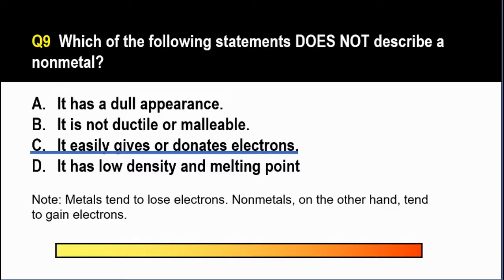And they become negatively charged. Whereas the metals, when they lose or donate electrons, they lose that negative charge. So in fact, they become positively charged. The correct answer is letter C.